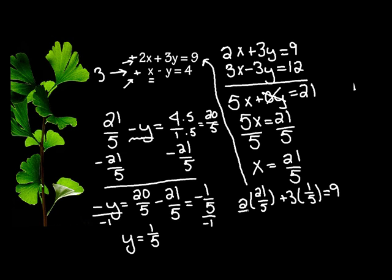So 2 is over 1. So 2 times 21 is 42 fifths. Plus 3 is over 1. And remember, when we multiply fractions, we just multiply straight across. So that's 3 over 5.